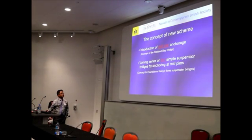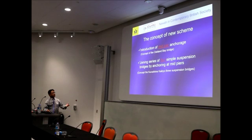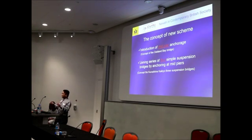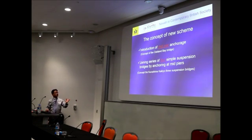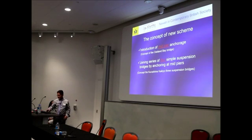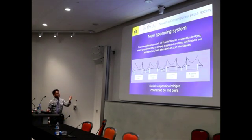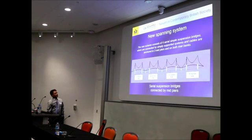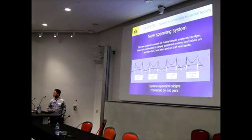I took these two ideas as the major concept of my new scheme. The key innovation is the introduction of mid-pier anchorage — a bridge can be anchored in the middle, whereas usually a suspension bridge is anchored at the banks, left or right. Here you can make an anchorage at the mid-pier. The other innovation is joining four bridges. So the system I created has four bridges with three spans each, joined by mid-piers. Using this system, I can cover the whole 1,400 metres.